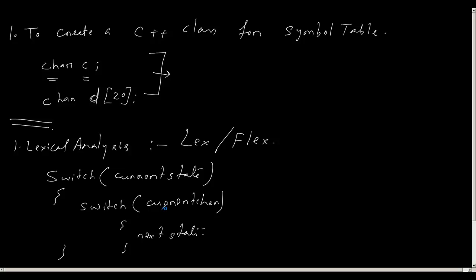You start with a starting state and a starting symbol. Based on what character you are processing, you switch on the current state and move to the next state. If you reach a final state, that substring will be a valid token. If you do not reach a final state, it is an invalid token.